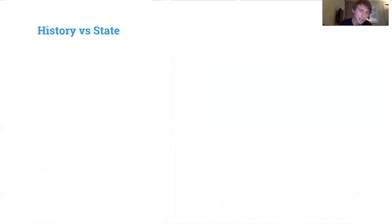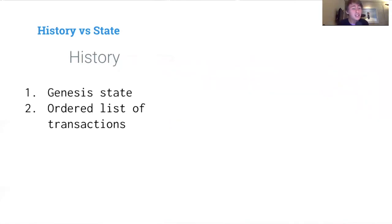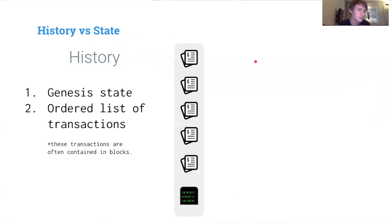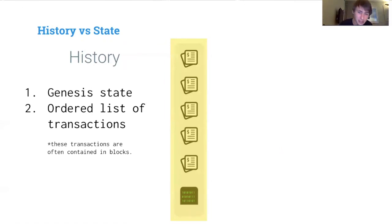There's an important distinction: history versus state. The history is the genesis state plus an ordered list of all transactions since genesis — that's all the information of our blockchain or central payment processor. Transactions in blockchains are often contained in blocks, but a block is just a bundle of transactions. This whole thing together is the history.